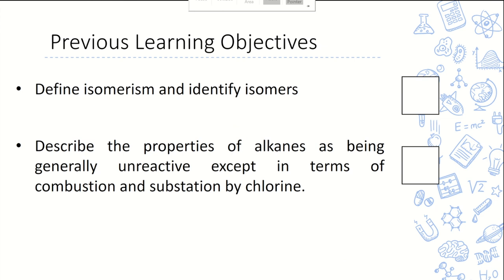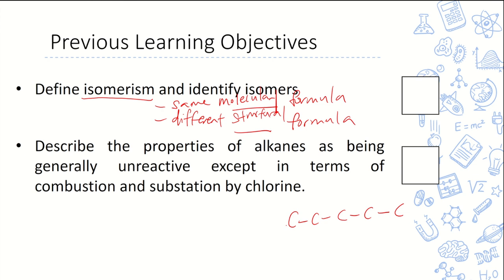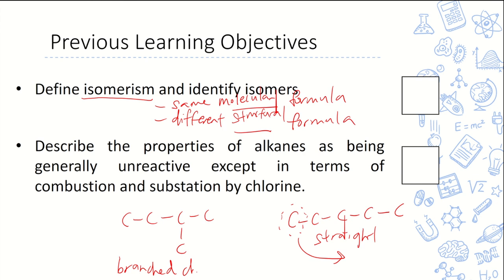We also learned about isomerism. Isomers have the same molecular formula but different structural formulas. For example, I can have a straight chain and a branch chain. In the branch chain, one of the carbons is shifted to the center, but the molecular formula remains the same while the structural formula is different.